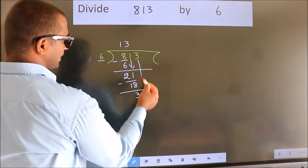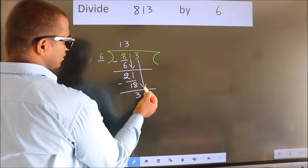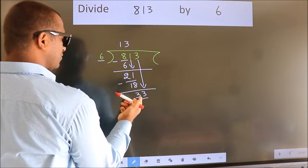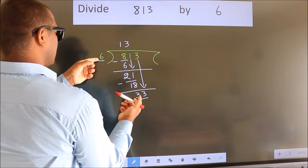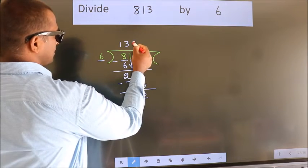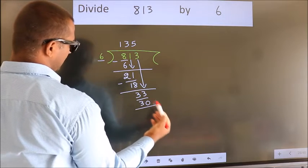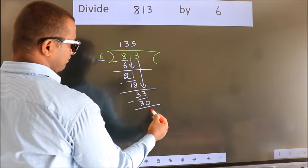bring down the beside number. So, 3 down. So, 33. A number close to 33 in the 6 table is 6 times 5, which is 30. Now, we subtract. We get 3.